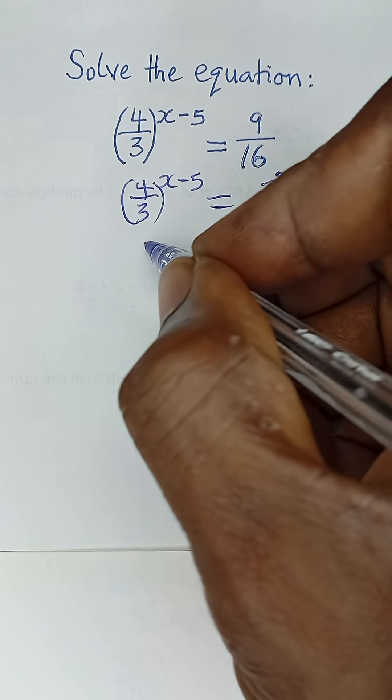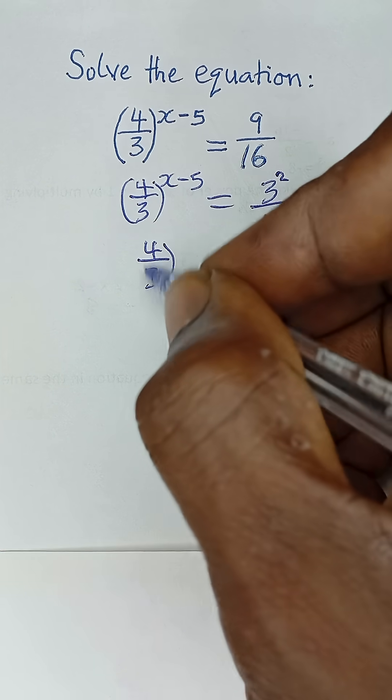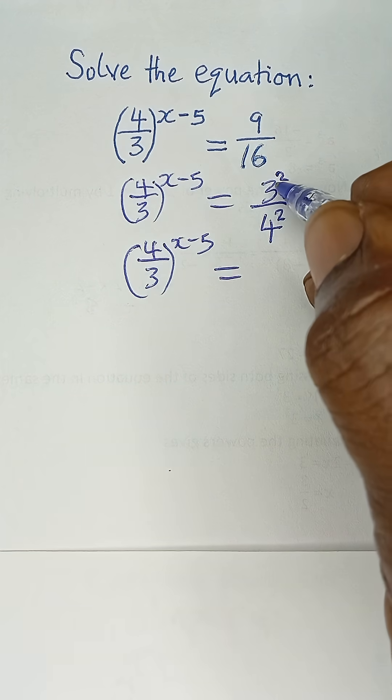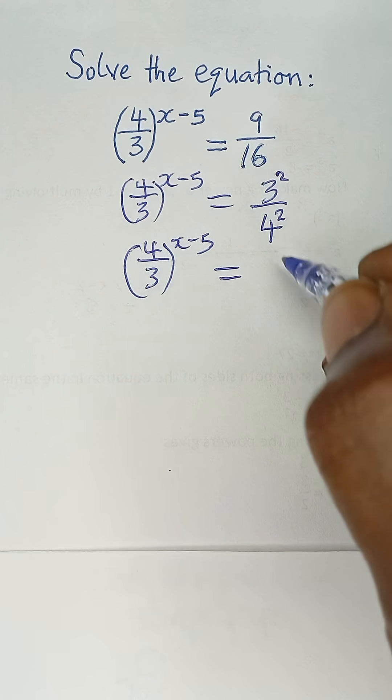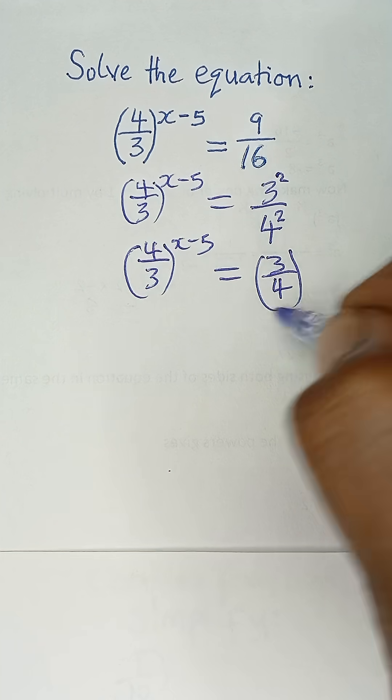So, in the same way, we can also express this right-hand part differently again. This is 4 over 3 raised to the power x minus 5 is equal to 3 over 4 squared, written like this: 3 over 4 and then this square.